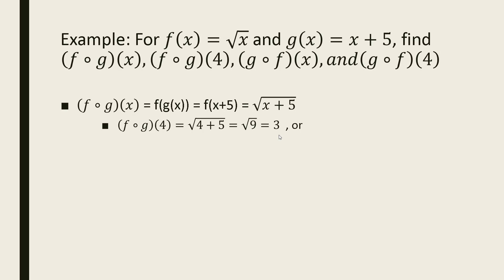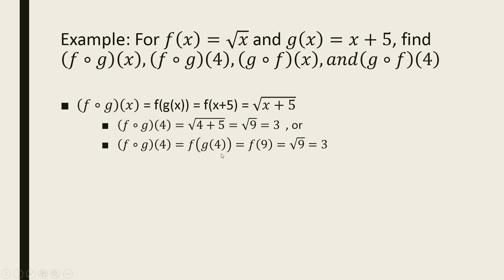Going back to the machine idea: we plug 4 into g(x), substituting 4 for x. g(4) equals 4 plus 5, which is 9. So we're really finding f(9), and the square root of 9 is 3. Either way you get the same answer — you plug 4 into g to get g(4), then plug that into f to get f(9), which is 3.